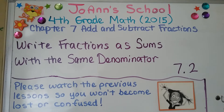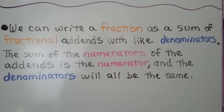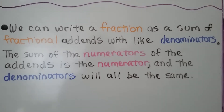Lesson 7.2: Write fractions as sums with the same denominator. We can write a fraction as a sum of fractional addends with like denominators. The sum of the numerators of the addends is the numerator, and the denominators will all be the same.